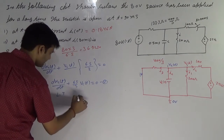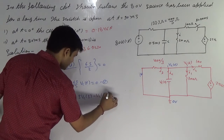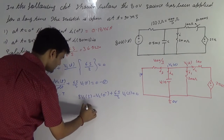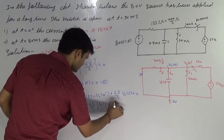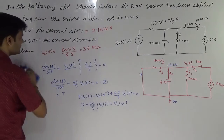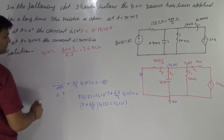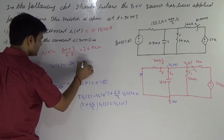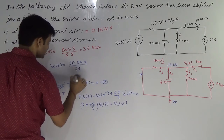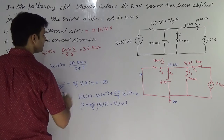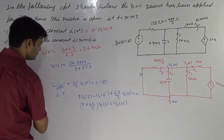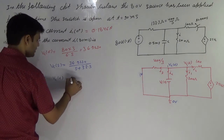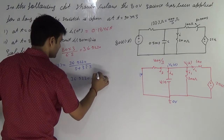Again applying Laplace transform on both sides: s·VCS minus VC(0 plus) plus 65 by 2 times VCS equals zero. So [s plus 65 by 2] times VCS equals VC(0 minus). Therefore VCS equals VC(0 minus) — which is 36.9230 — divided by [s plus 65 by 2]. This is 32.5.